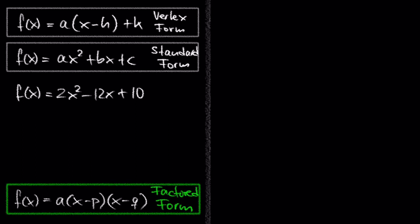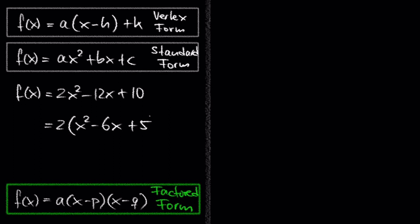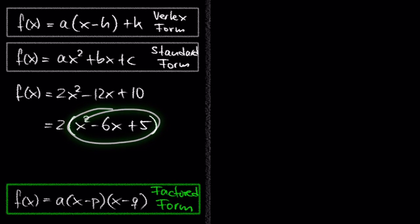How can we convert this into the factored form? The first step is to factor out the 2, because x squared has to stand alone by itself. Recall that we did the same when converting the standard form into the vertex form. So now we can write 2 times (x squared minus 6x plus 5). We already have a, which is 2, and we have another factor, which is x squared minus 6x plus 5.